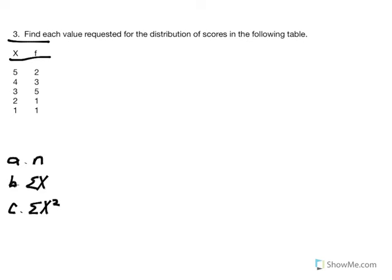For the following problem, we're asked to look at a distribution and find each value requested. Part A says identify what N is equal to. Just as illustrated in the previous problem, the summation of our frequency is equal to N. Each frequency represents one person — if these are quiz scores, two individuals scored five, three scored four, five scored three, and so on. Taking the summation of our frequency column: 2+3+5+1+1 gives us a total of 12. N equals 12.